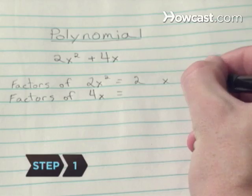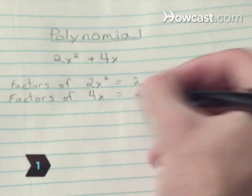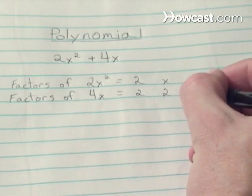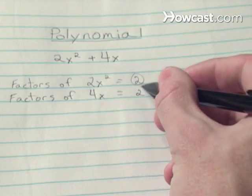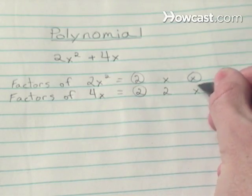Step 1: Look at the expression and find the greatest common factor for each term. For the expression 2x squared plus 4x, both terms contain factors of 2 and factors of x.